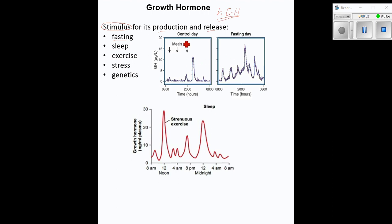Looking at these two graphs: the control shows a normal day with three meals spread throughout the day. We see a little fluctuation, but the biggest peak occurs around 2000 hours — 8 at night — when most people go to bed around 10 or 11 p.m. On the fasting day, there is much more fluctuation throughout the day, and the peak is much much higher compared to the non-fasting day. So sleep is clearly another major stimulus, with the big peak occurring shortly after someone falls asleep.